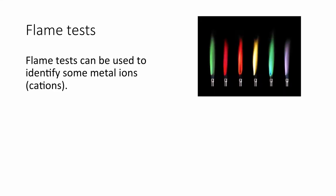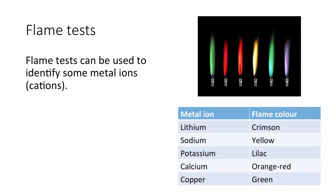Flame tests. Flame tests can be used to identify metal ions called cations. In the table we can see the five metal ions that you're expected to know the flame colours of. Lithium, which is crimson. Sodium, which is yellow. Potassium, which is lilac. Calcium, which is orange red, also referred to as brick red. And copper, which is green.